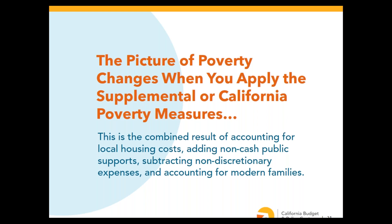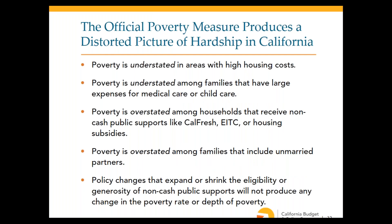When you use the official poverty measure instead of the supplemental or California measures, you get a distorted picture of hardship in California. Under the official measure, poverty is understated in high-housing-cost areas, and understated among families with large medical or childcare expenses. Poverty is overstated among households that receive non-cash supports like CalFresh, EITC, or housing subsidies, because those resources aren't counted. And any policy changes that expand or shrink non-cash public supports — like EITC, CalFresh, child tax credits, or housing subsidies — will produce no change in the official poverty rate.